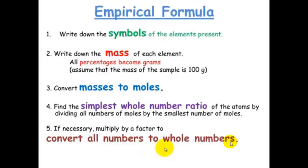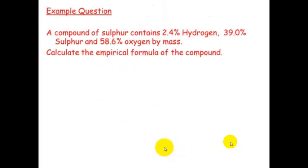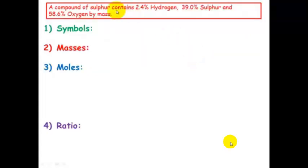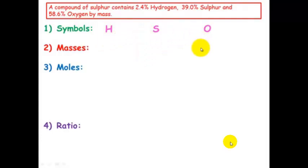Here's an example: a compound of sulfur contains 2.4% hydrogen, 39% sulfur and 59% oxygen by mass. We need to calculate the empirical formula. Step one — write down the symbols: hydrogen, sulfur and oxygen. I like to work down in columns.